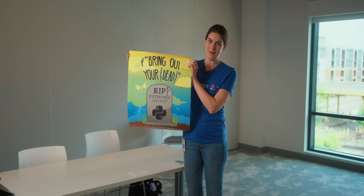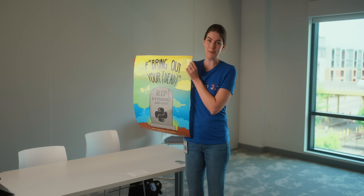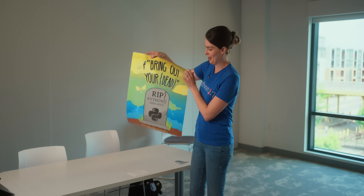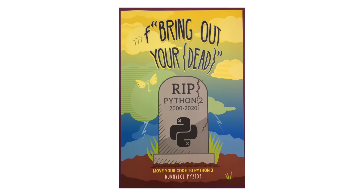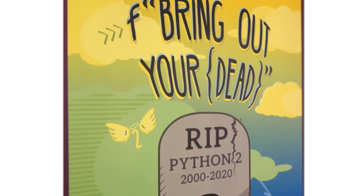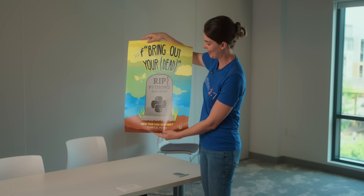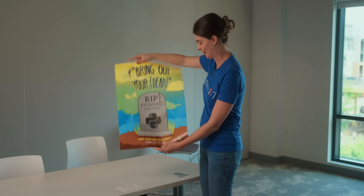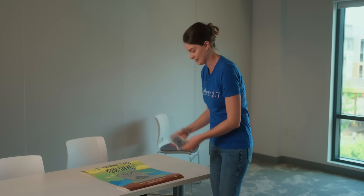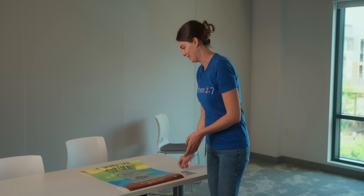We did a whole marketing campaign to try to tell people that they have to migrate. We got these posters made up using something called an F-string, which is new in Python 3 and something people were really excited about. It's telling you Python 2 is dead, you have to move your code to Python 3. We had posters hung up all over the place. I had these stickers made of a little gravestone. It was a whole marketing campaign blanketing the company to make sure people knew they had to migrate.